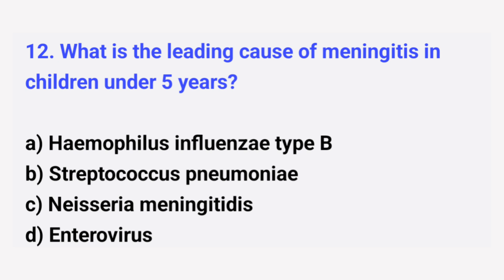Question number 12. What is the leading cause of meningitis in children under 5 years? The right answer is option A: Haemophilus influenzae type B.